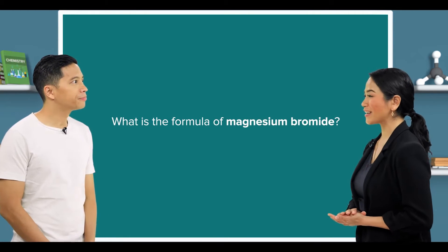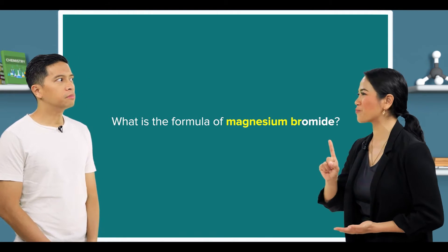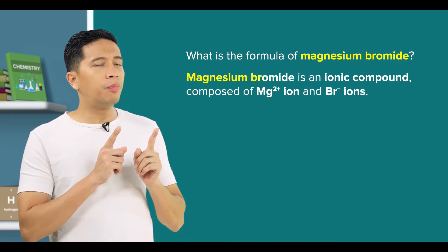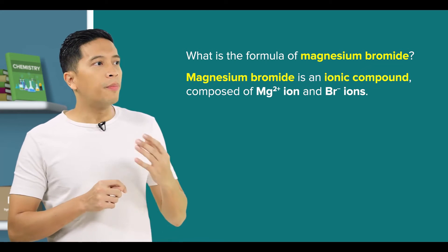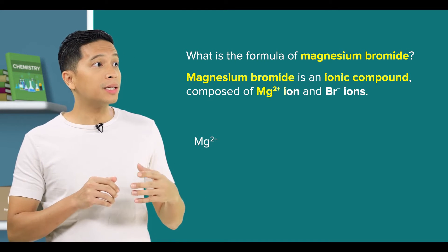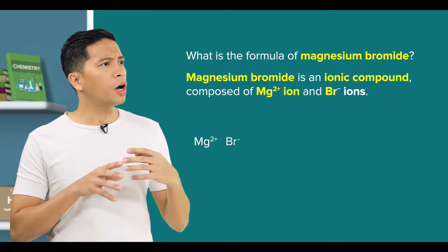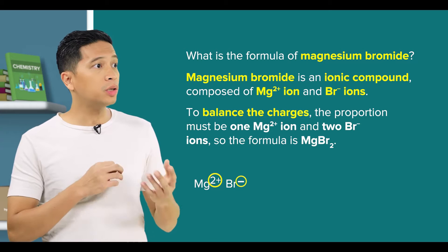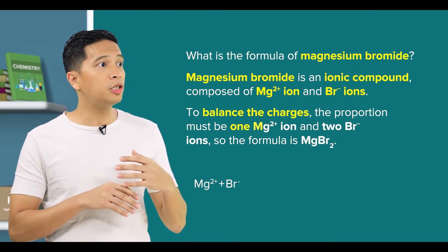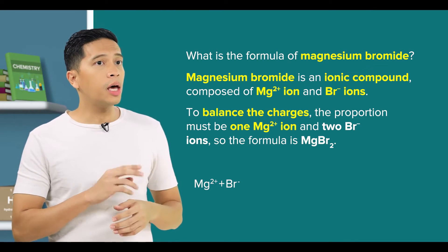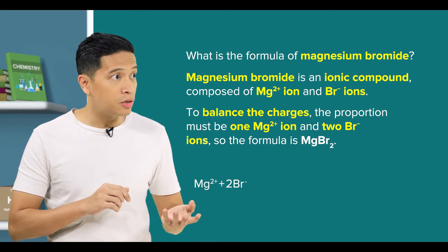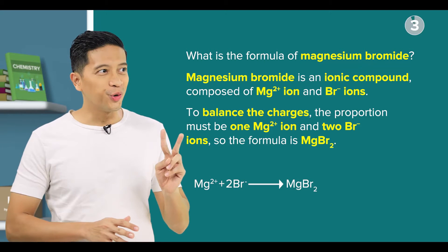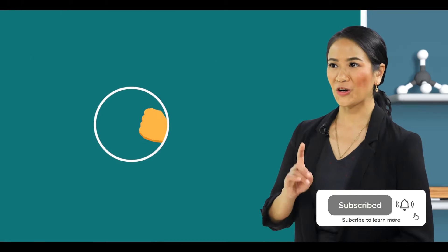What is the formula of magnesium bromide? Hmm. Magnesium bromide is an ionic compound composed of Mg2+ ion and Br- ions. To balance the charges, the proportion must be 1 Mg2+ ion and 2 Br- ions. So the formula is MgBr2. Correct.